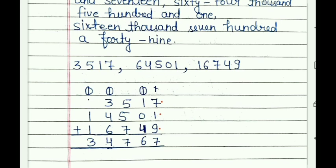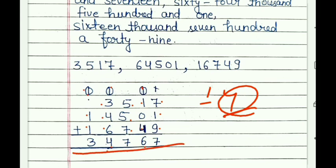At 1's place: 9 plus 1 equals 10, then 10 plus 7 equals 17 — write 7, carry 1. At 10's place: 4 plus 0 equals 4, plus 1 equals 5, then plus 1 carry equals 6. At 100's place: 5 plus 5 equals 10, then 10 plus 7 equals 17 — write 7, carry 1. At 1000's place: 6 plus 4 equals 10, then 10 plus 3 equals 13, with carry equals 14 — write 4, carry 1. At 10,000's place: 1 plus 1 equals 2, plus 1 equals 3. So the required answer is 84,767.